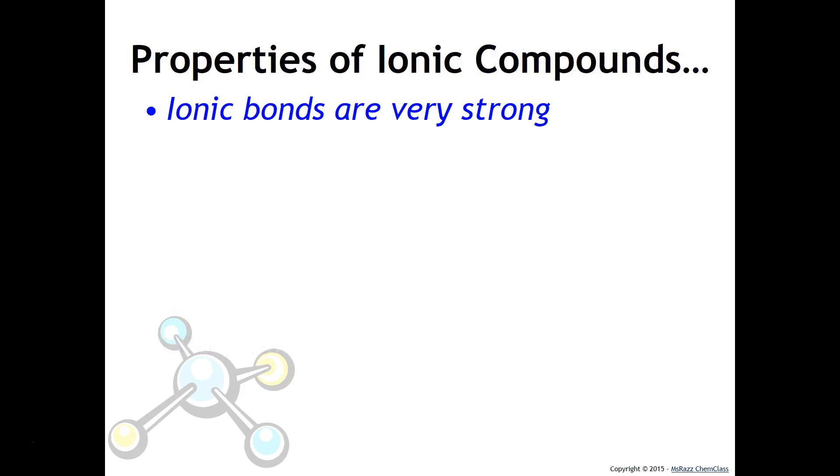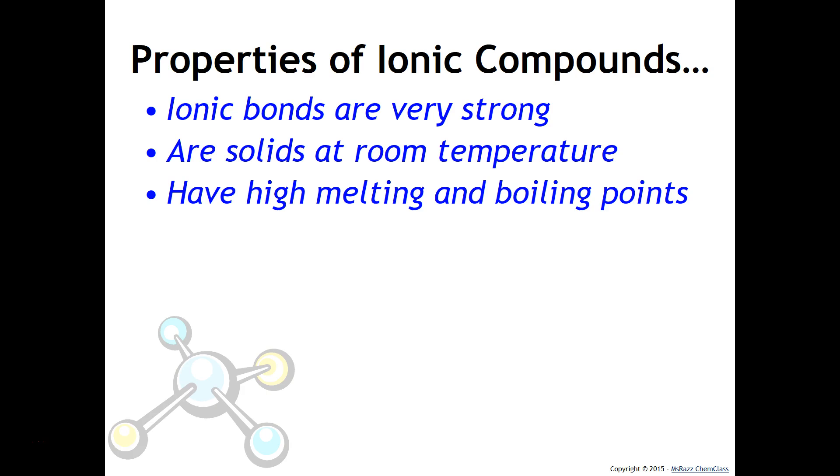Ionic bonds are very strong. It has to do with the fact that the crystal lattice at which all of the bonds are connected makes it very difficult for these compounds to move and melt and boil. That is why they are typically solids at room temperature. Because of this, they will have high melting and boiling points. You can identify an ionic compound because it's made primarily of a metal and a nonmetal.